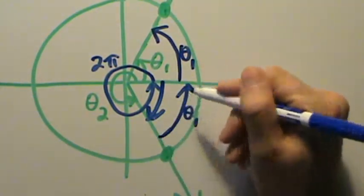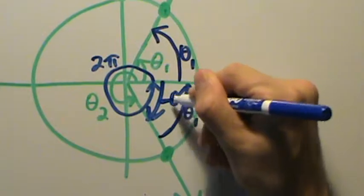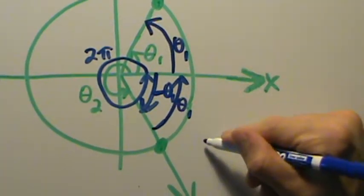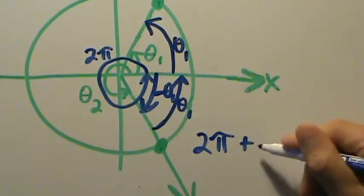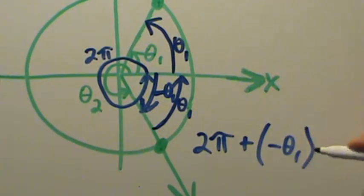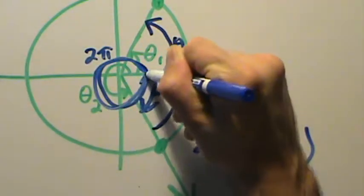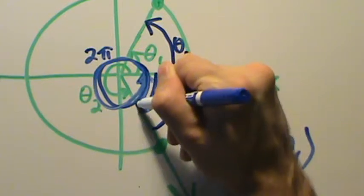That's theta 1 but in the opposite direction, so it's really negative theta 1. So if we go an angle of 2 pi and then add to that negative theta 1, what's that? That's 2 pi and then add to that negative theta 1.